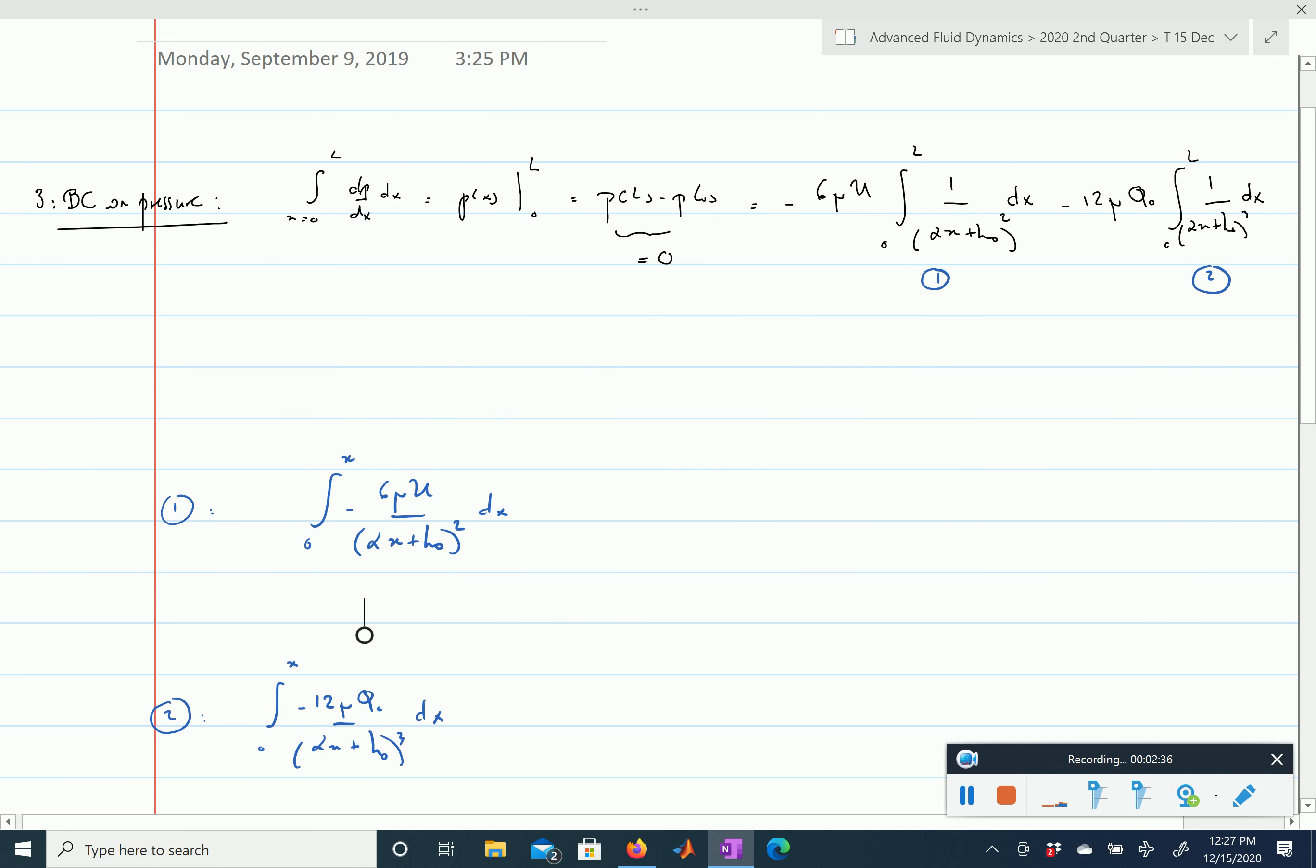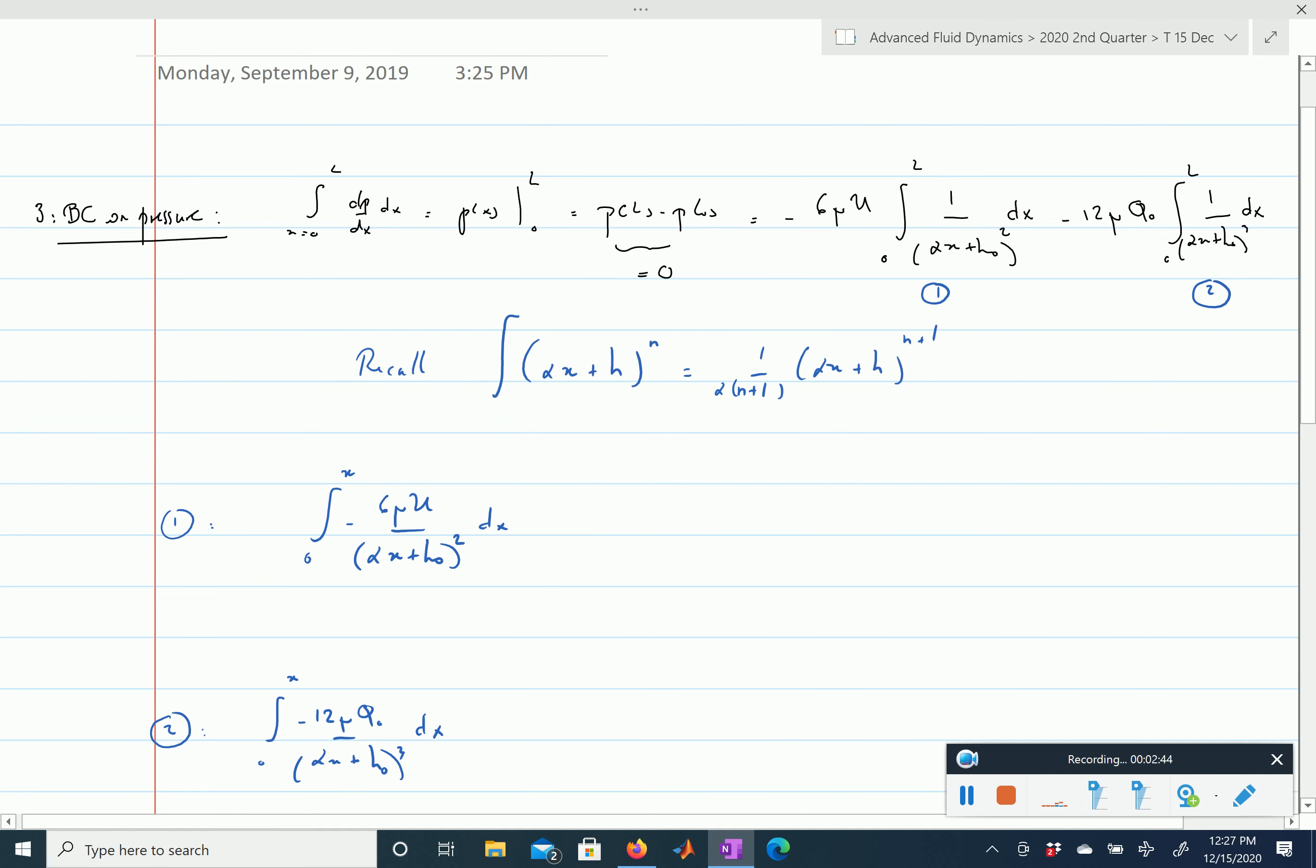Now this is a lot of algebra, but the only integral you need to do is a rational function of x. So you just need to know this integral here, the integral of alpha x plus h to the power n, here n being a negative number, this is minus 2 here. Once you know this integral you are able to compute those two integrals, so I'm going to skip a little bit over the detail.